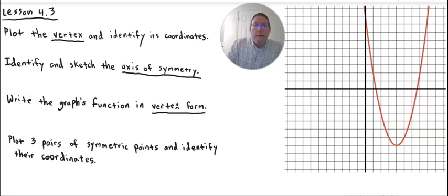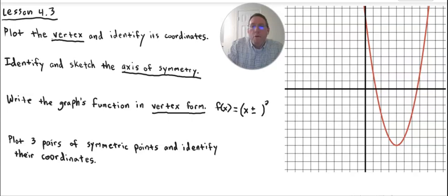Vertex form looks like this. You can write y equals, or you can write f(x) equals. I'm going to do f(x) because it's a function. It's going to have a set of parentheses with an x inside, and you're either going to have a plus or minus. Then there's a square. Outside the parentheses, you'll have a plus or minus, and then a number. There's a number inside the parentheses and a number outside.